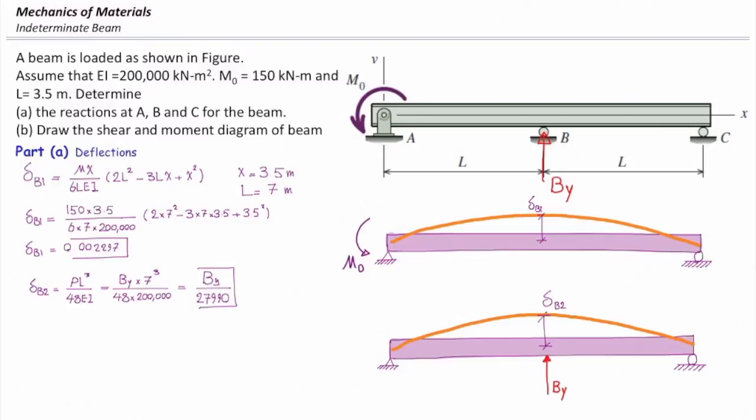And here, because I want to have zero deformation at that point, I say delta one plus delta two is equal to zero, because they are both going upward. And from that equation, I can see how much is the force. If I apply this equation, that gives me BY equal to 27990 times delta B1, which is 64.3.